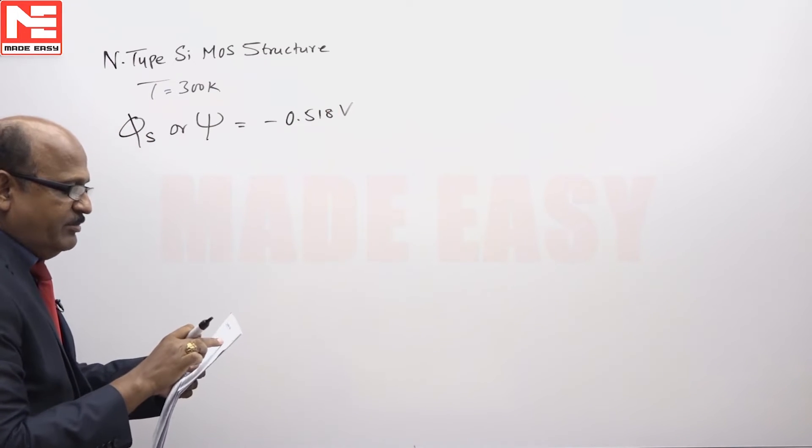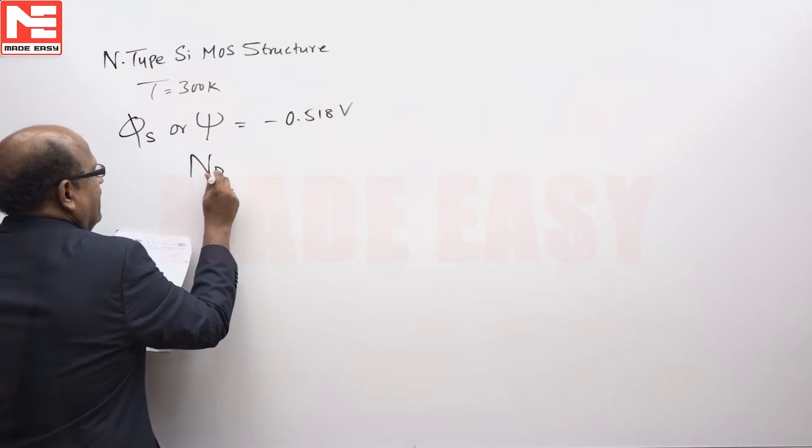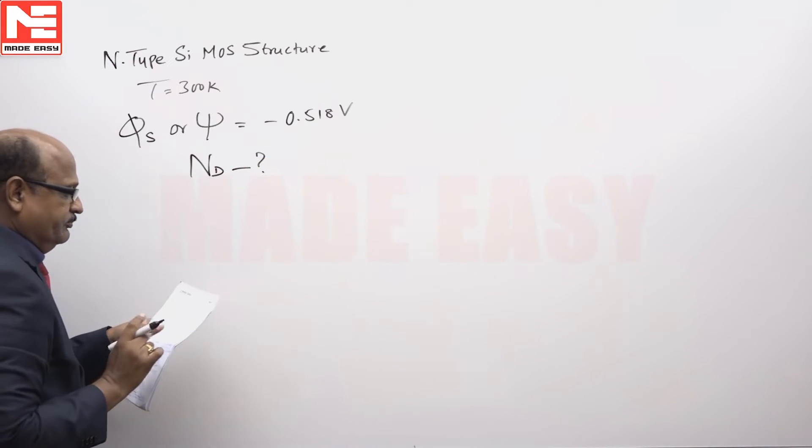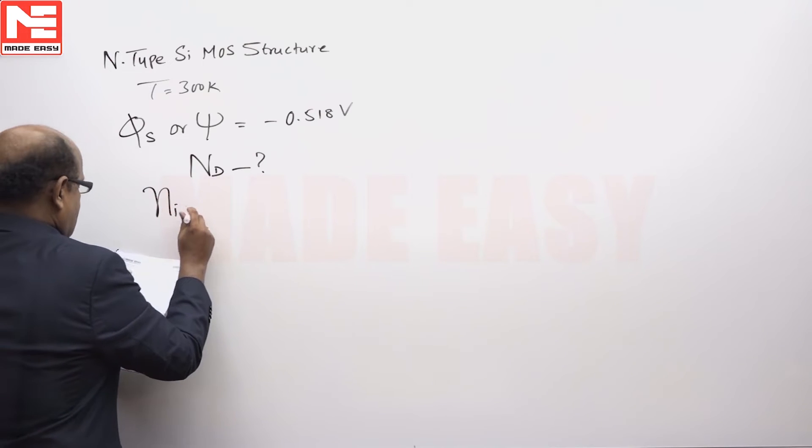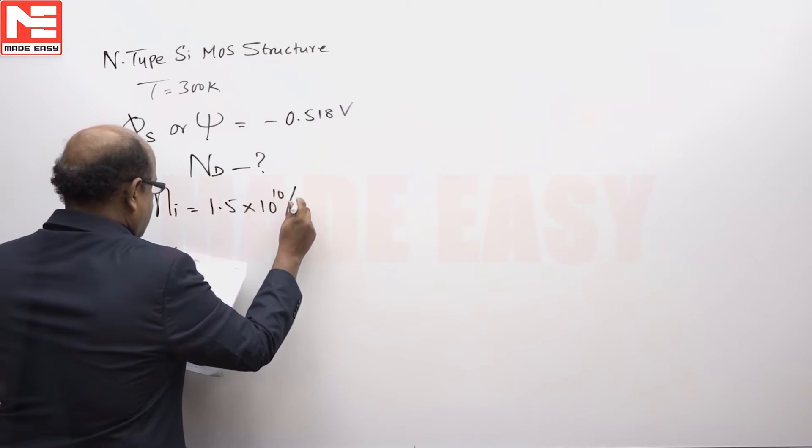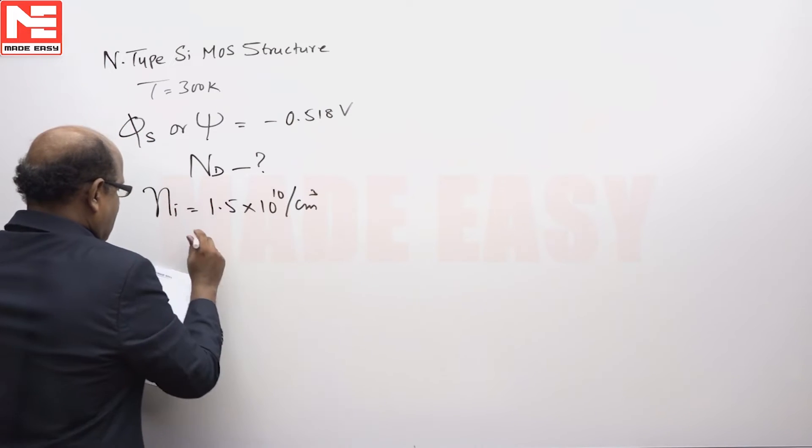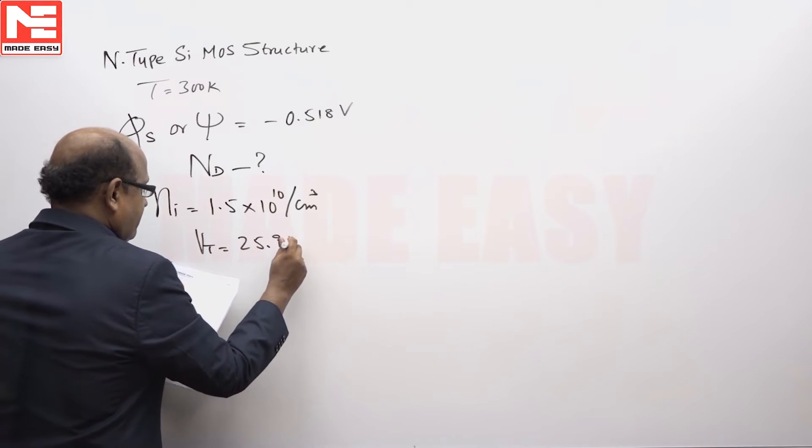Semiconductor doping is n-type, so N_d equals how much? Assume n_i equals 1.5×10^10 per centimeter cubed and V_t equals 25.9 millivolts.